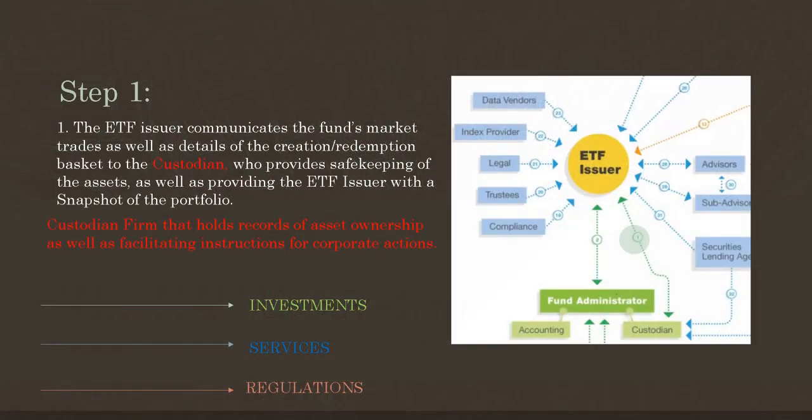For the purpose of this video, you're going to see green, blue, and orange arrows that highlight the map of the ETF creation process. In this video, we're only going to be discussing investments, or the green arrows — the investment part of it. In the following two videos, we'll discuss services and regulations and how they all flow together. And anything you see in red is going to be a definition with an explanation underneath. Let's go ahead and get started.